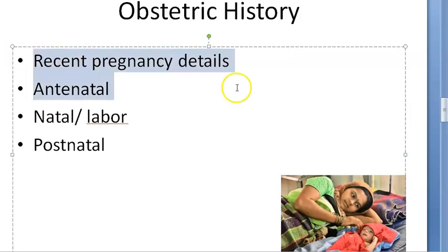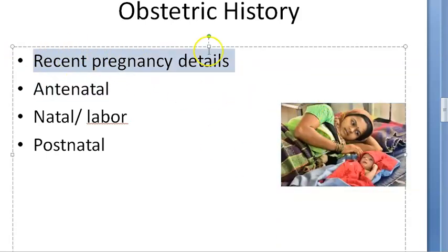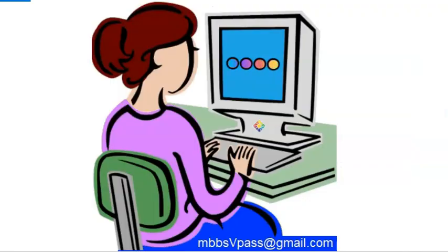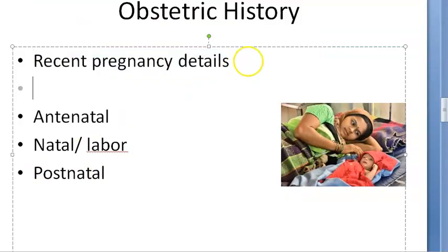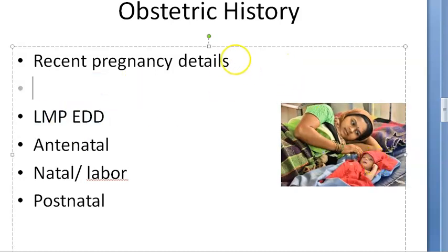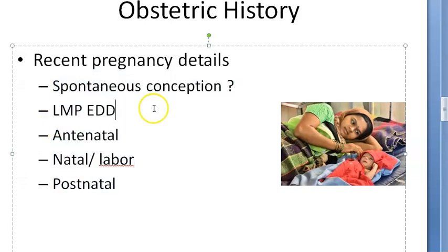Find out whether it was a lower segment cesarean section or it was a natural and vaginal delivery. What were the outcomes? Did she have any abortions? Why did she have, everything you have to find out. Any complications she had in any of the pregnancies, all that can affect this baby. So you should find out complete details of that. Then was it a spontaneous conception? Was she taking any contraceptive before this pregnancy? So this is the recent pregnancy that she has delivered just now.